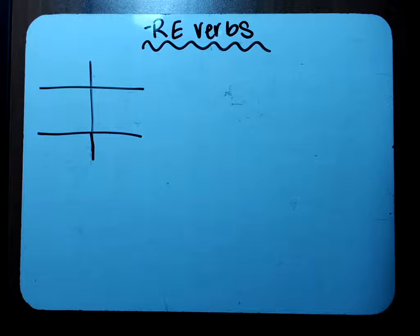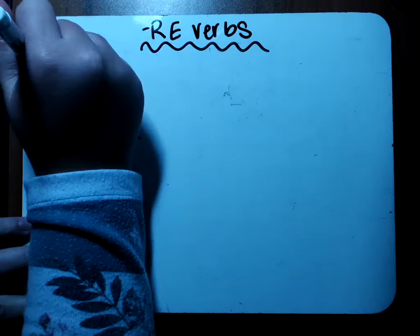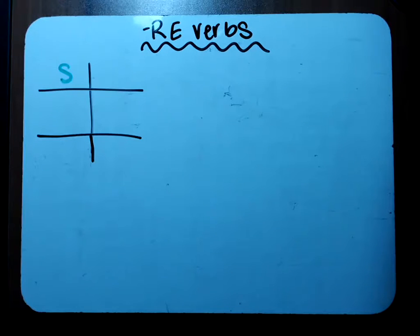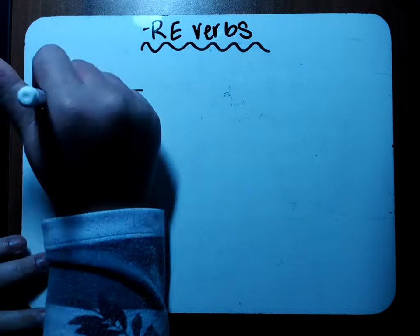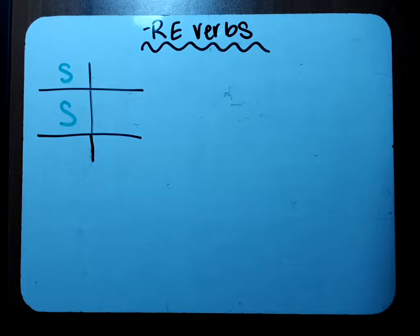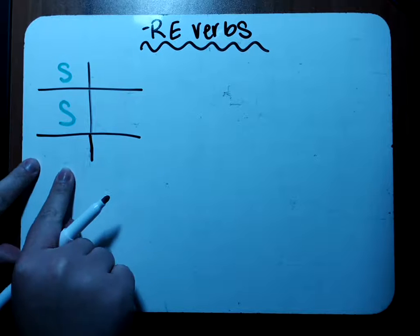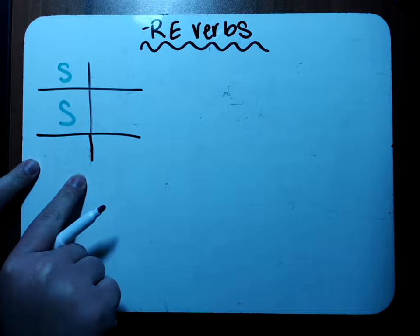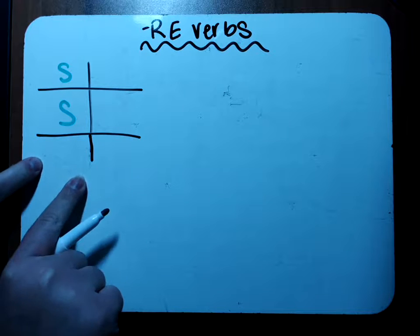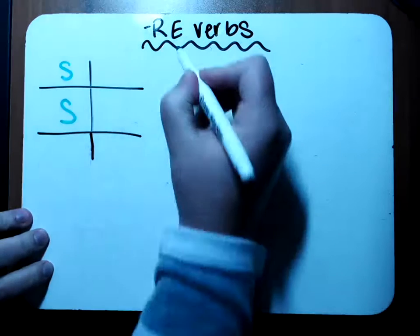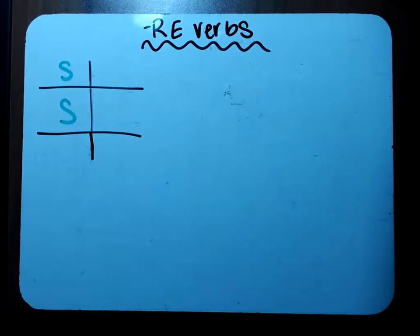On this side you have seen these endings before — they are the ER verb endings: O-N-S, E-Z, and E-N-T. So you've seen these three before. The right-hand side has ER verb endings, and the ones on the left are the new ones.